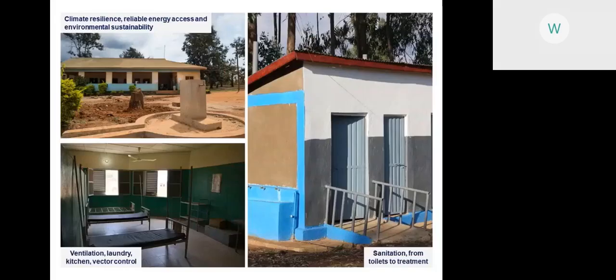Sanitation is also particularly important — from toilets (ensuring they are accessible, sufficient in number, well-maintained, and functioning) through to treatment and disposal of wastewater and gray water. There are also elements covered under the WHO essential environmental health standards — the 'green books' — including ventilation, laundry, kitchen control, and other elements outside typical WASH. Importantly, climate resilience, reliable energy access, and environmental sustainability are integrated, building on the climate-resilient framework.